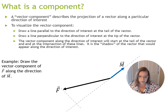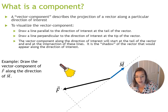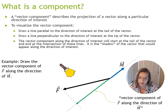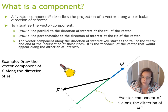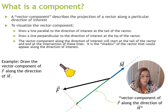Now I want you to take out an imaginary flashlight and shine it on vector F, and visualize the shadow that would show up along this direction of interest. Whatever shows up along this line is the vector component of F along the direction of M. That shadow would lie along the direction of M, starting from the tail of vector F and ending where the perpendicular line intersects the direction of interest. You draw two lines — one parallel and one perpendicular to the direction of interest — at the tail and tip of the vector, to visualize this projection.